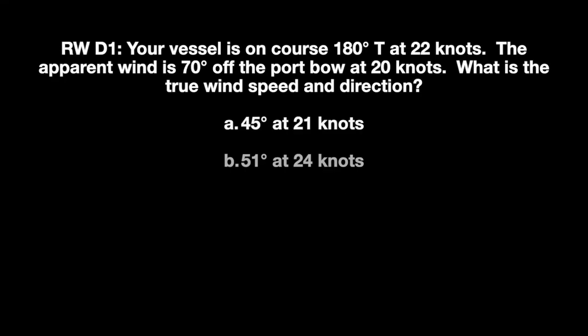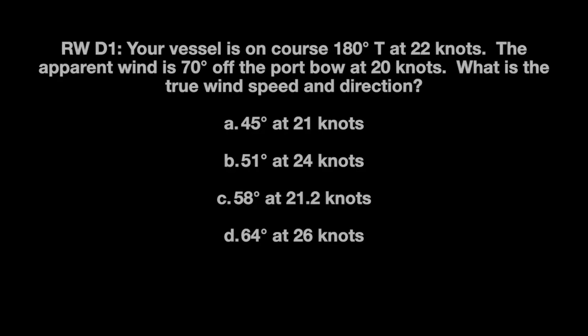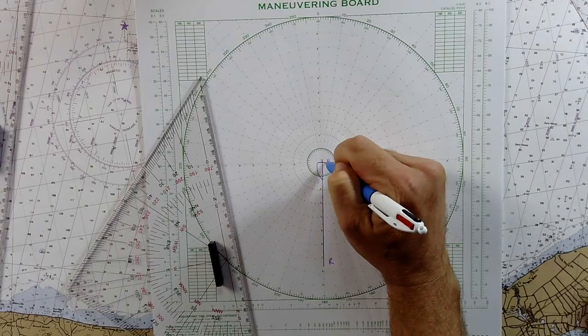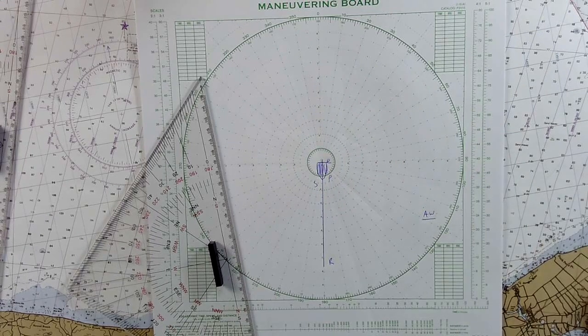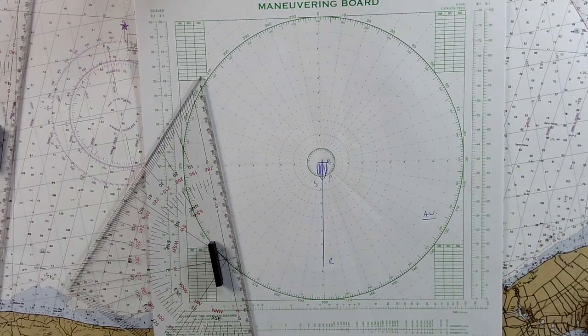So the next part of the problem says that the apparent wind is from 70 degrees off the port bow at 20 knots. So remember that our ship is heading in this direction so that this is port and this is starboard. So if the wind is 70 degrees off the port bow,